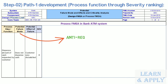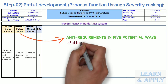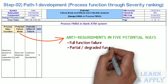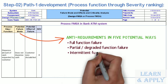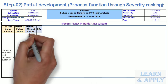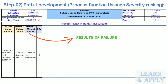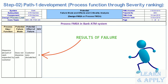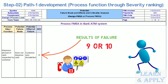Failure modes are written as anti-functions or anti-requirements in five potential ways: full function failure, partial or degraded function failure, intermittent function failure, over-function failure, and unintended function failure. Effects are the results of failure, where each individual effect is given a severity ranking. Actions are considered at this stage if the severity is 9 or 10. Recommended actions address failure modes with high severity rankings for safety and regulatory impact.